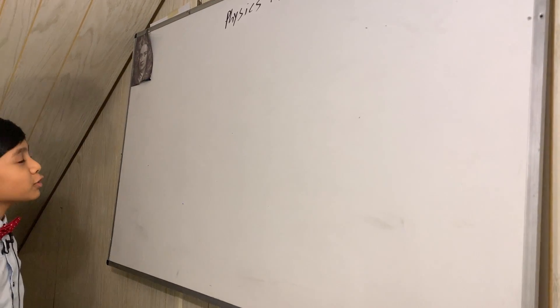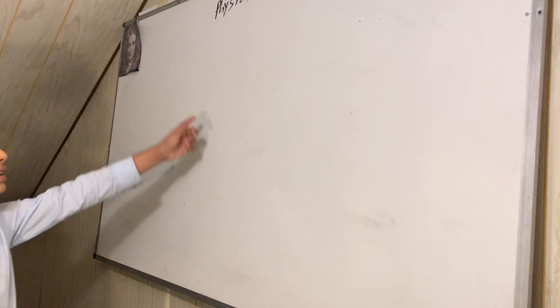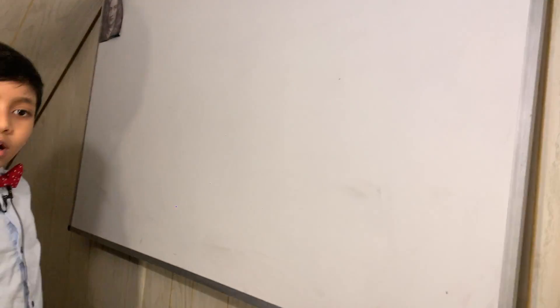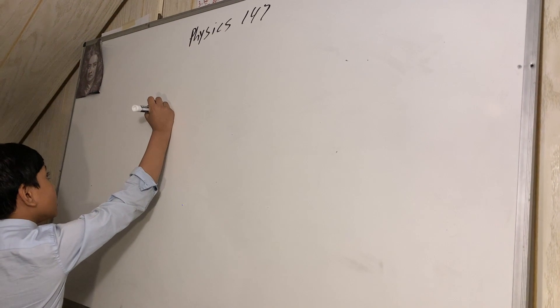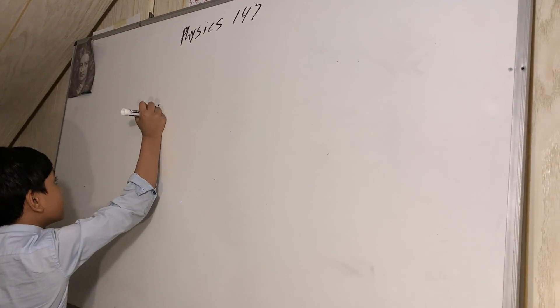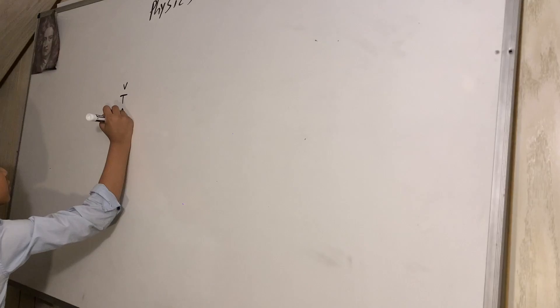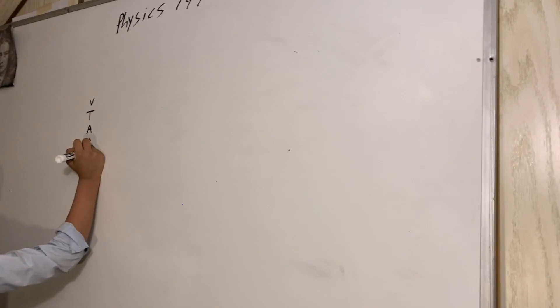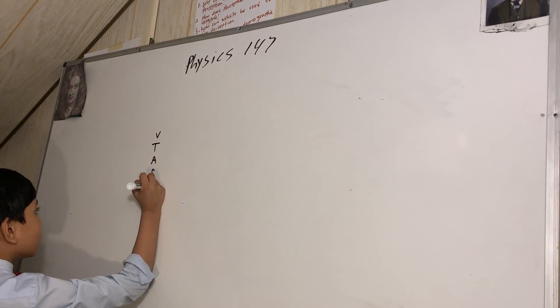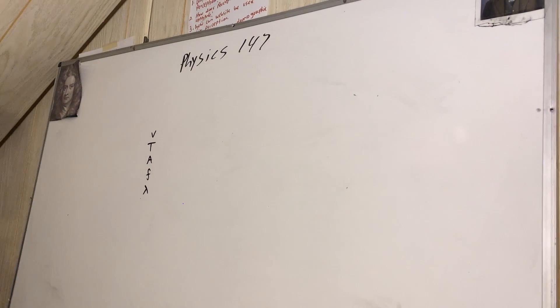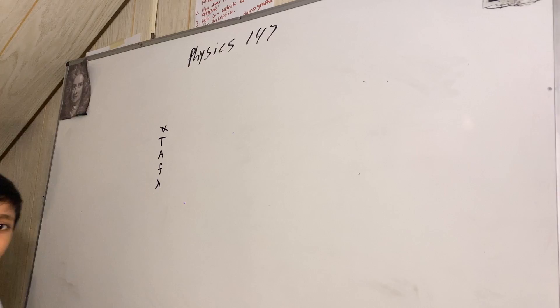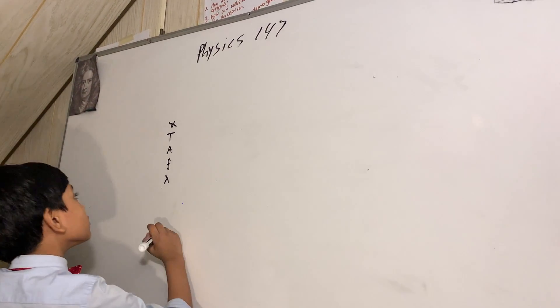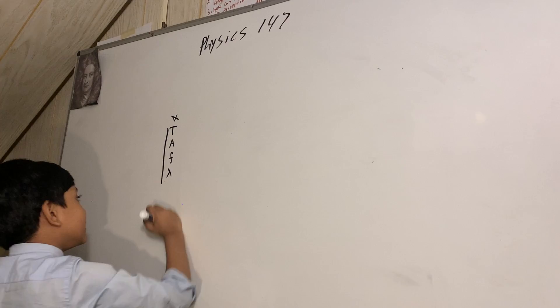Welcome to another lecture on physics. Today we're looking at Physics 147. Last time we left off looking at explanations of speed, period, amplitude, frequency, and wavelength. I don't think you guys need an explanation for velocity, but today we're going to be looking at all four of these and getting some examples.